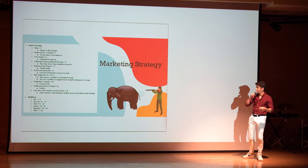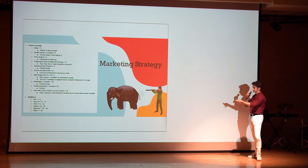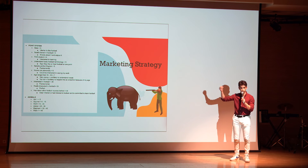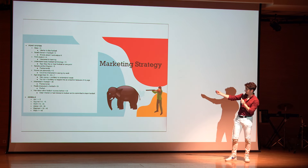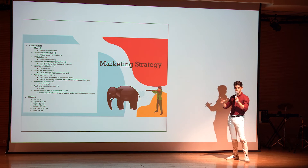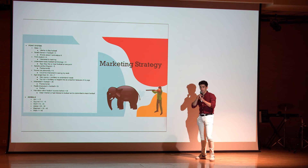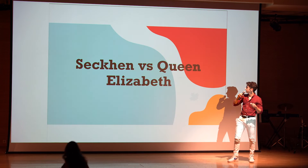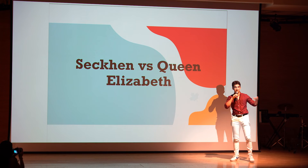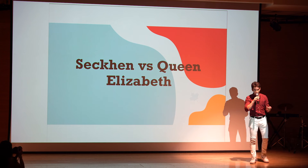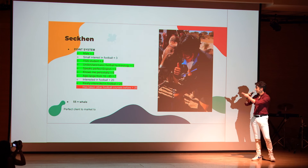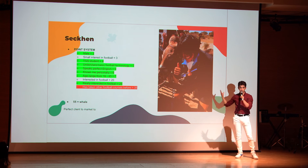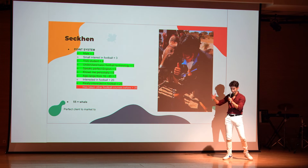For marketing, I created a point system to analyze what qualities my clients have. I would add up points, and the more points, the bigger the animal. For example, analyzing Secund versus Queen Elizabeth — Secund has so many attributes that I want in a client, and therefore he's a whale, which means someone I should market to.